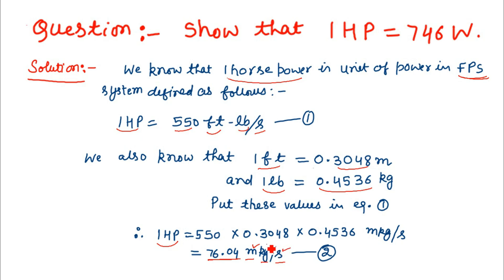Kilogram is not the absolute unit of force—it is the gravitational unit of force. Therefore, to obtain the correct relation between horsepower and watt, we must convert this gravitational unit of force (kilogram) into the absolute unit (newton).